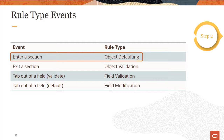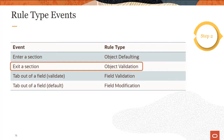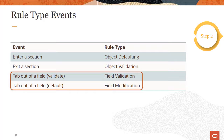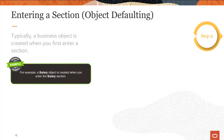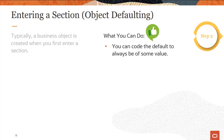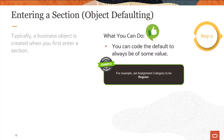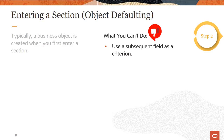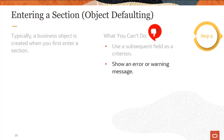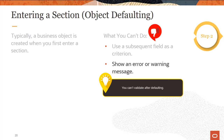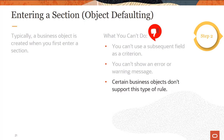When you enter a section, you can default values. When you exit a section, you can validate values. When you tab out of a field, you can validate and default values. In most cases, a business object is created when you first enter a section — for example, a salary object is created when you enter the salary section. When defaulting a value upon entering a section, you can specify the defaulted value, for example, set assignment category to be regular. There are also limitations: you can't use a field that appears later in the section or in a subsequent section as a criterion. You can only use fields that have already been visited. You can't show an error or warning message since you can't validate after defaulting. This type of rule is not supported by certain business objects.